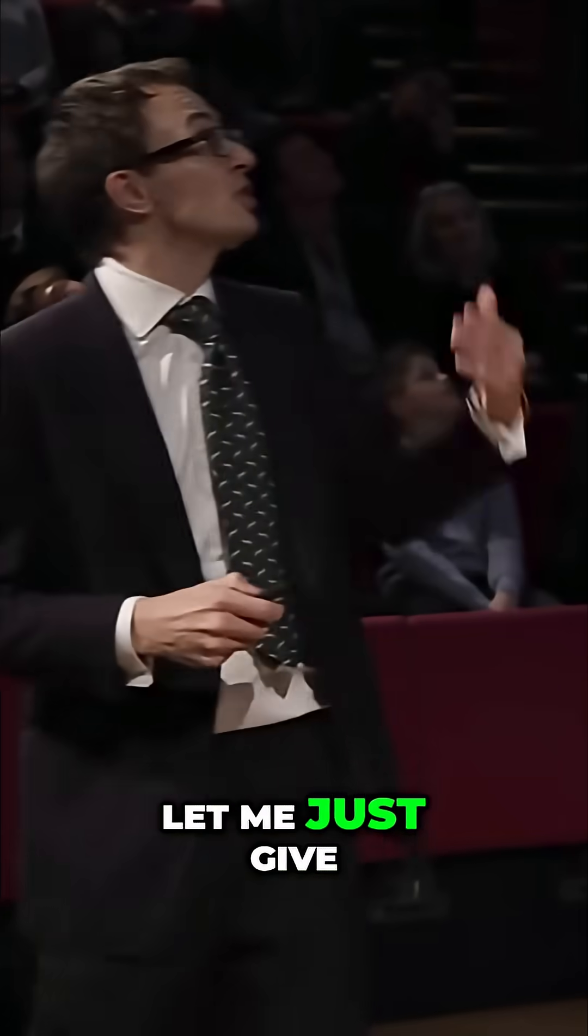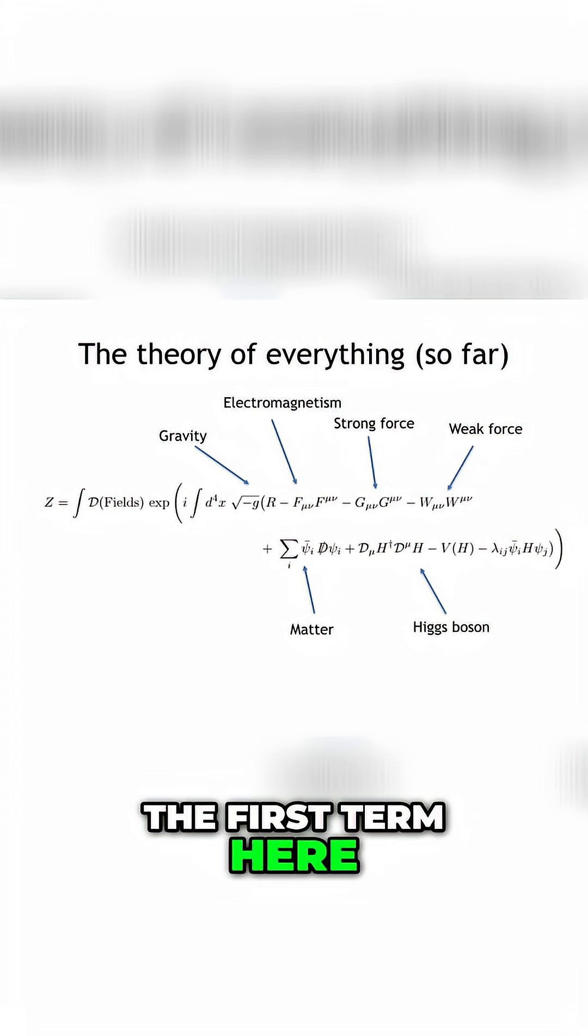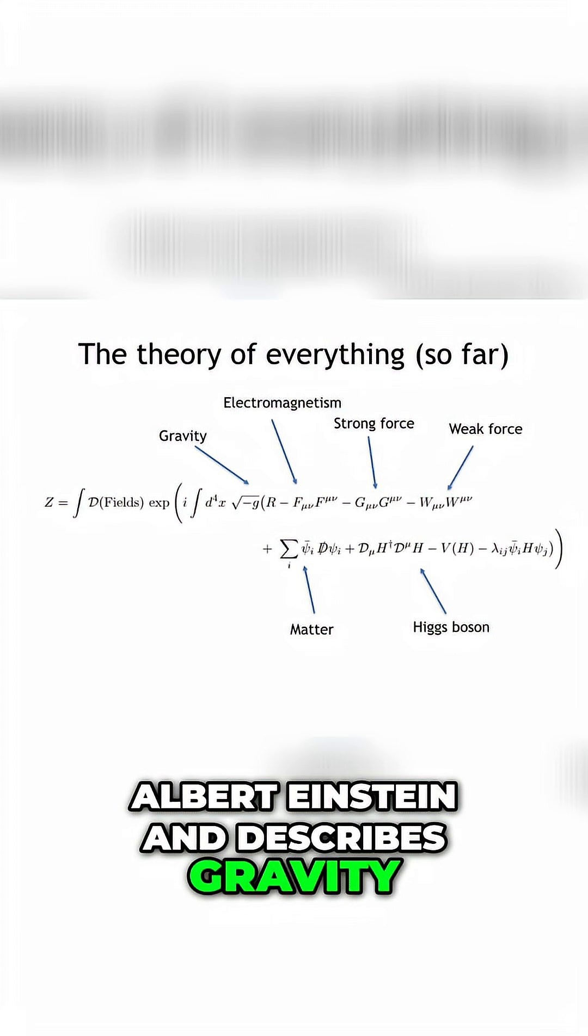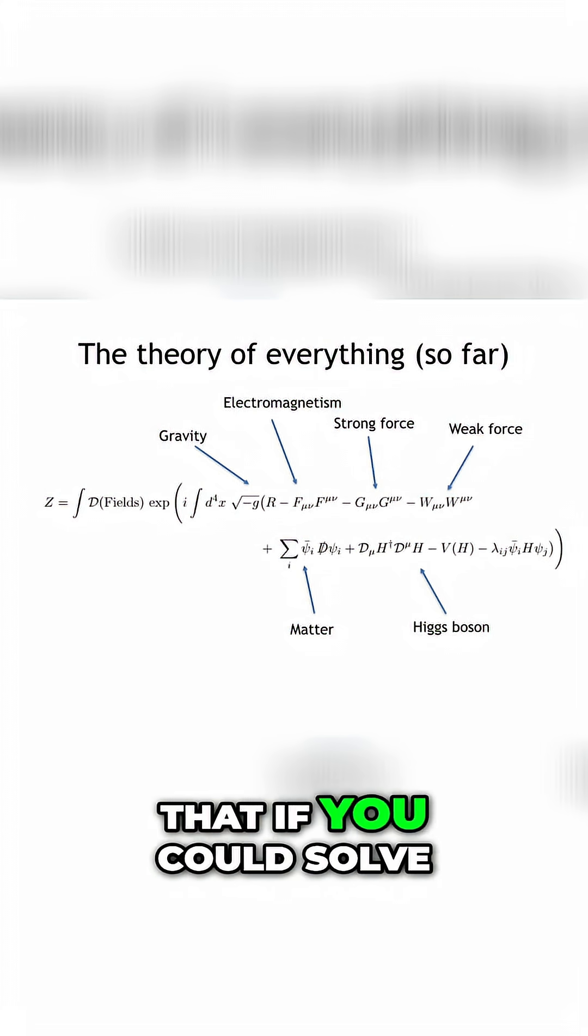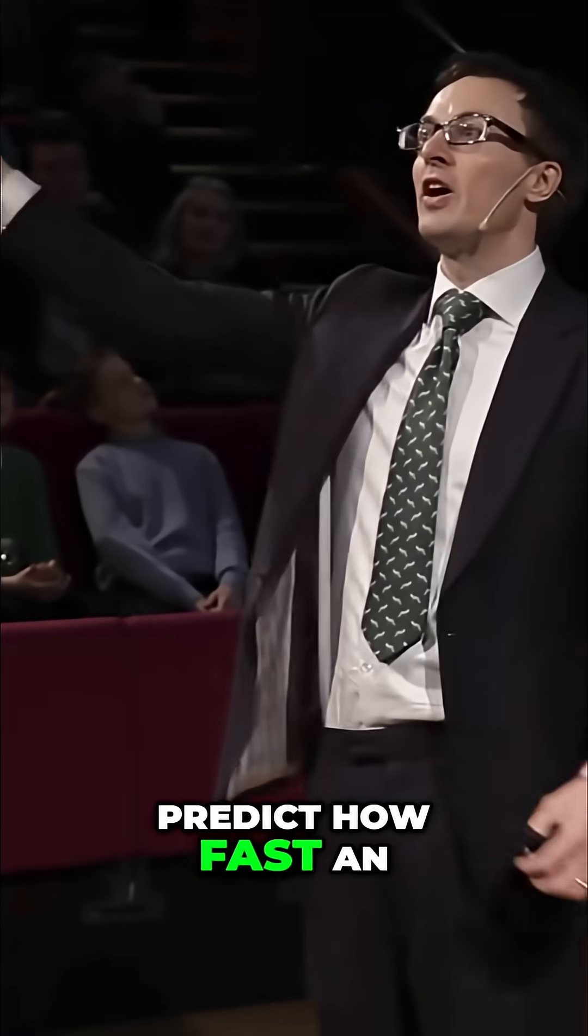Let me give you a sense of what we're looking at. The first term here was written down by Albert Einstein and describes gravity. What that means is that if you could solve this tiny little part of the equation, you can, for example, predict how fast an apple falls from a tree.